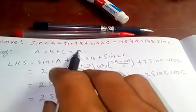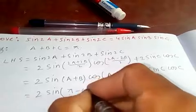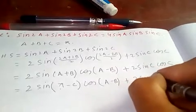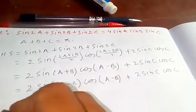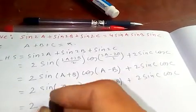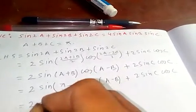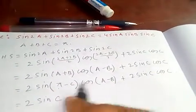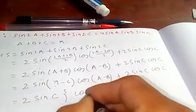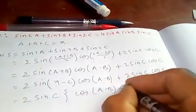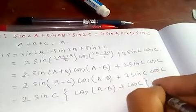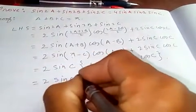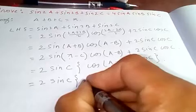Here, A + B = π − C, so sin((A+B)/2) = sin((π−C)/2) = sin(C). Taking 2 and 2 as common factors, and substituting, we get 2·sin(C)·[cos((A−B)/2) + cos(C)]. Now if you apply the formula for cos(A−B)/2 + cos(C), grouping these terms together.